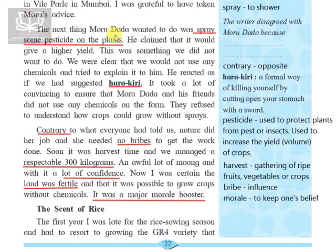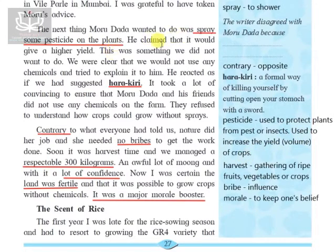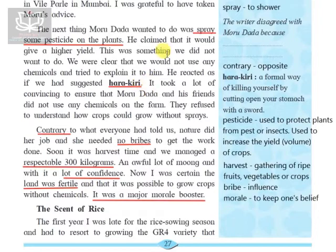Morudada claimed that pesticides — specific types of chemicals used to protect plants from pests and insects, or to increase the yield or volume of crops — would give a higher yield. However, this was something the writer did not want to do. They were clear that they would not use any chemicals and tried to explain this to Morudada. He reacted as if they had suggested harakiri.